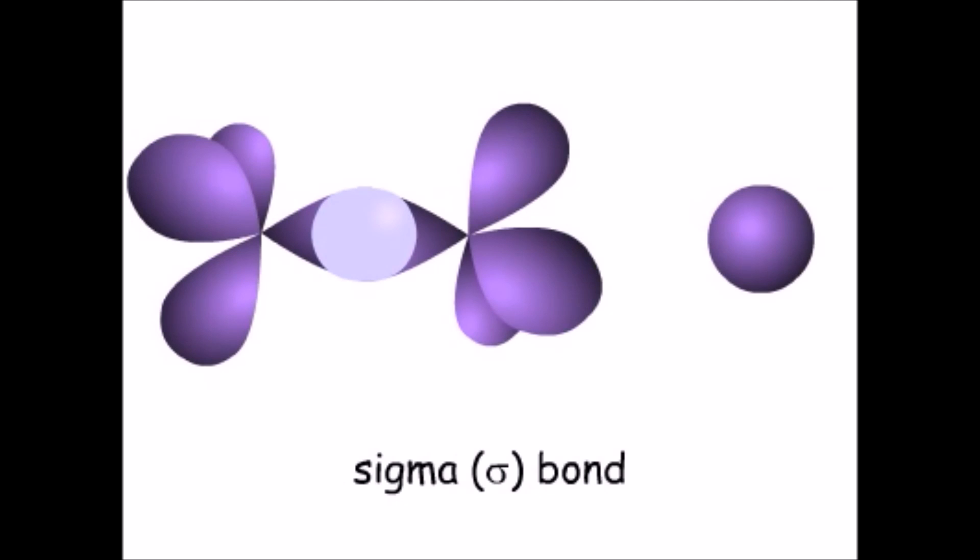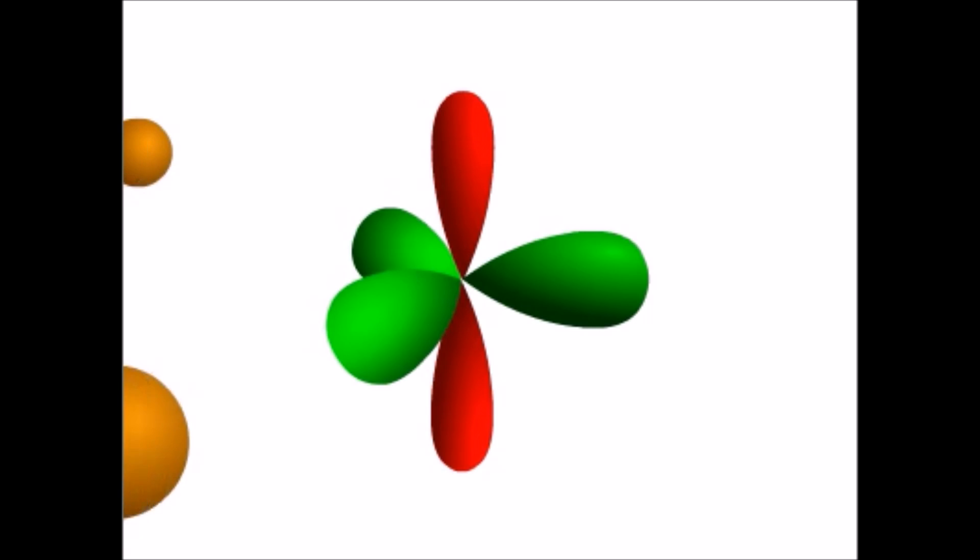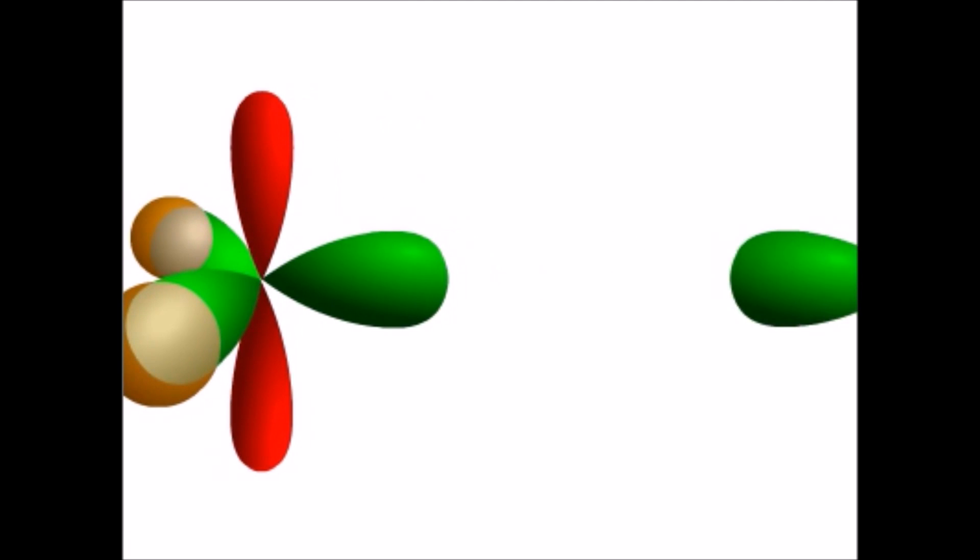If a second bond is to be made between two atoms already bonded, it will be made by overlap of P orbitals. A good example is ethylene, which has five sigma bonds, all in one plane.